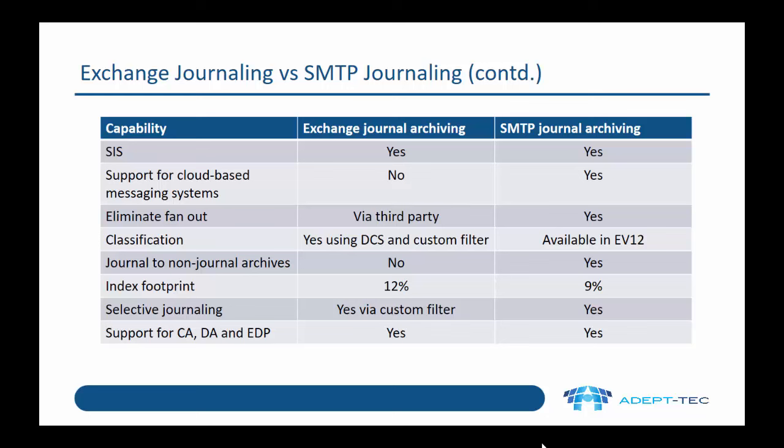Selective journal archiving is available via a custom filter for exchange journal archiving and is built into SMTP journal archiving. Both exchange journal archiving and SMTP journal archiving support compliance accelerator, discovery accelerator, and the EDP platform.